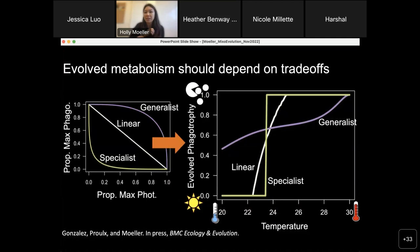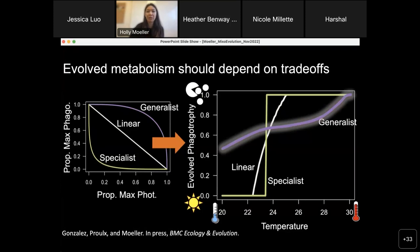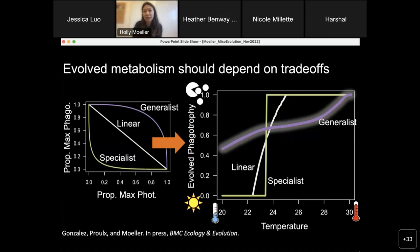Looking back at Logan's mathematical modeling results, we have a clue: we need to understand the tradeoffs that determine how much mixotrophs can invest in phototrophy versus phagotrophy. When we first examined this result, we focused on the observation that all three tradeoff functions led to an increase in phagotrophy with temperature. But the extent of this increase depended on the tradeoff function — the generalist mixotroph in purple shows a much more muted response than a mixotroph with a linear or specialist tradeoff function. Understanding underlying tradeoffs may help predict which mixotrophs will have the strongest evolutionary responses.